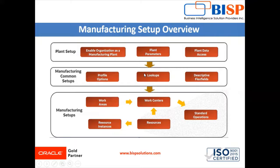Lookups provide the means of validation and list of values, where valid values appear in a list with no duplicate values. For example, an application might store the value Y or N in a column in a table, but when displaying this value in the user interface it shows Yes or No. The last one is descriptive flexfields. Descriptive flexfields are an optional setup to capture additional information for setups and work definition entities.